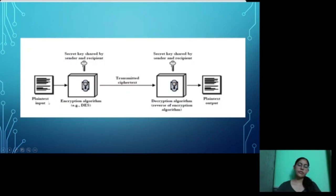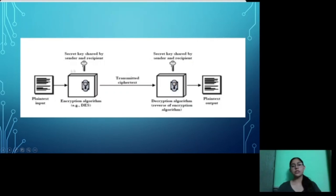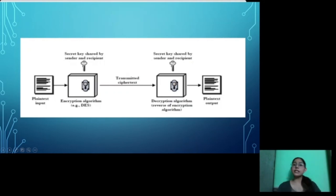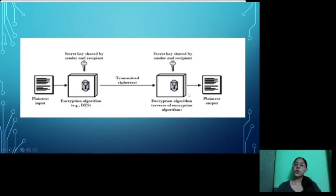In symmetric key cryptography, there is a plain text input. We apply the encryption algorithm — such as DES — along with a secret key to convert the plain text into ciphertext, which is then transmitted to the receiver. The receiver then applies the decryption algorithm using the same secret key to convert the ciphertext back into plain text.